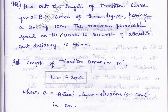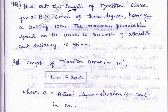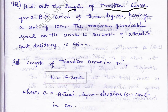In today's problem we will deal with a new type of problem of railway engineering. We have to calculate the length of transition curve. There are different types of curves: circular curve, simple curve, vertical, reverse, and transition. A transition curve is the curve which is introduced in between a straight and circular curve.